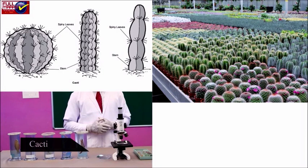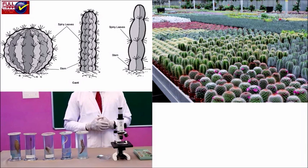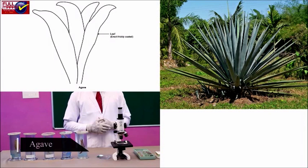Cacti have a succulent stem to retain water. Leaves are reduced into spines so as to reduce the surface area. Mechanical tissue is present in the stem to withstand drought conditions.